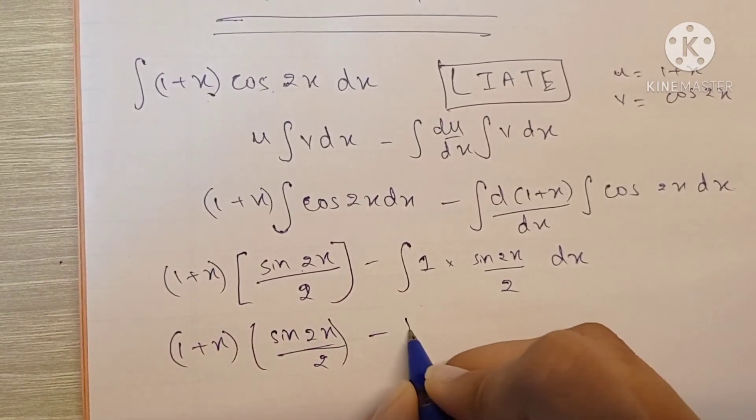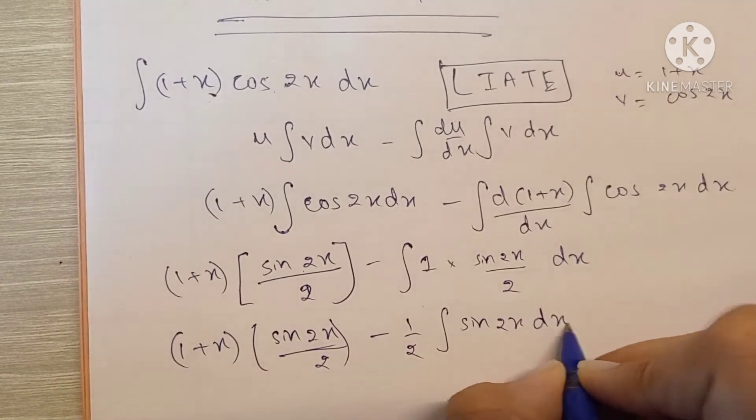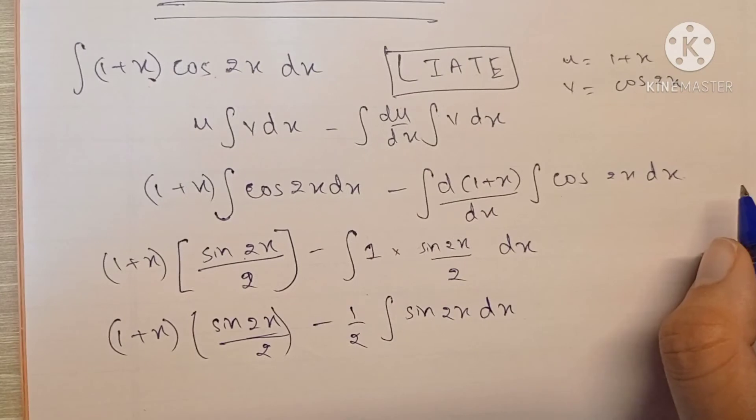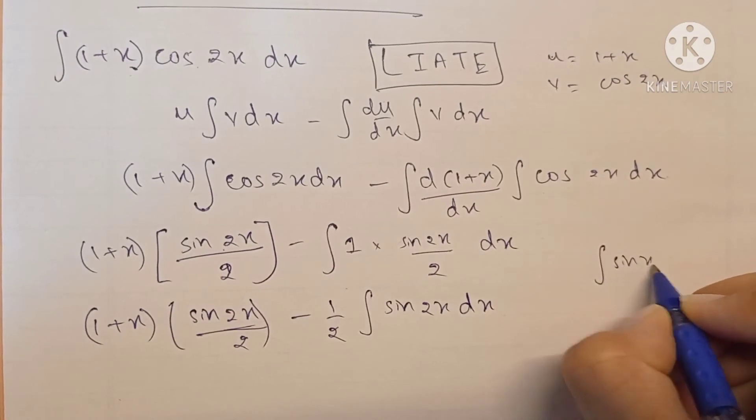Integration of sin(x) is minus cos(x) upon 1, where 1 is the coefficient of x. Let me write that down.